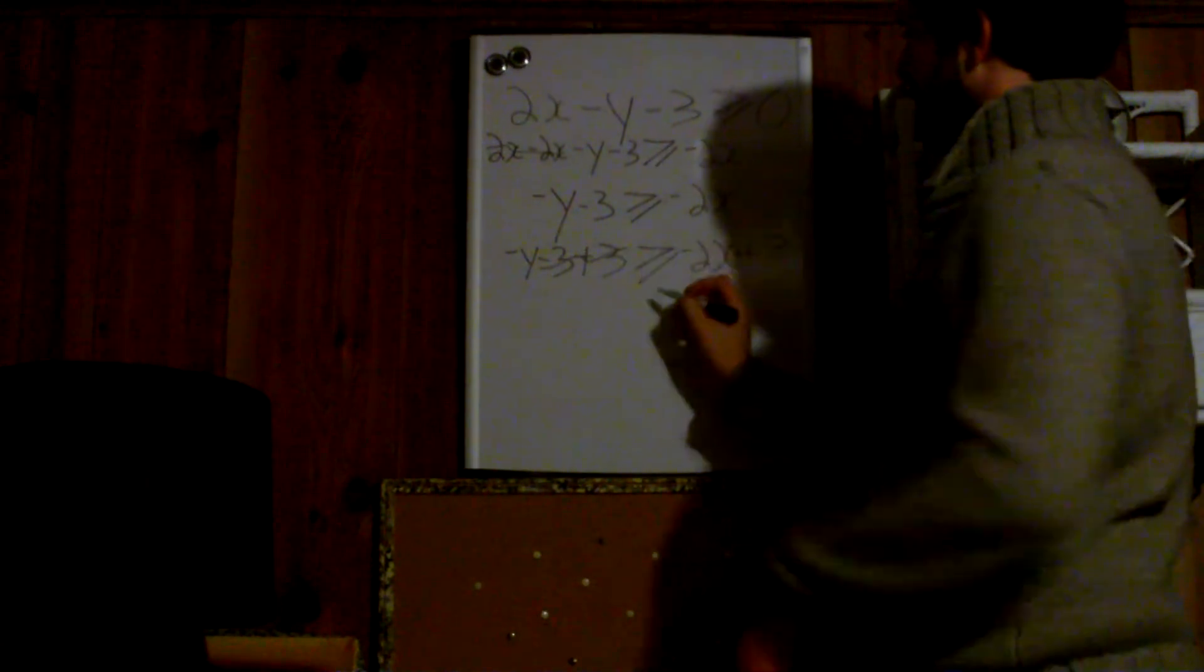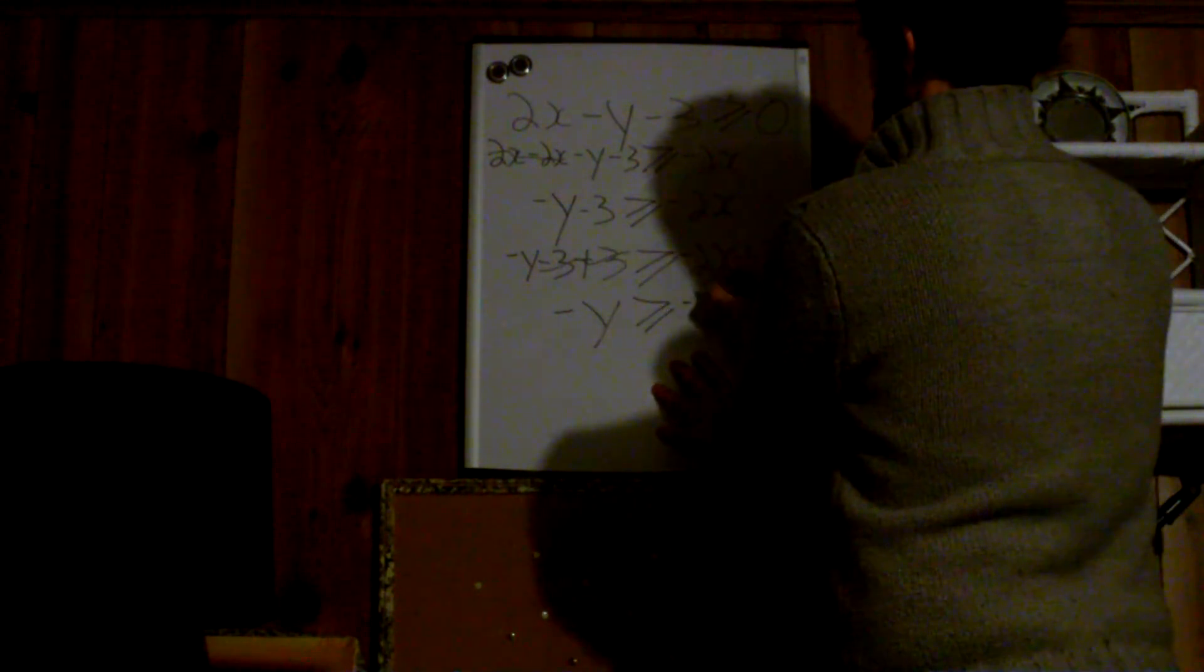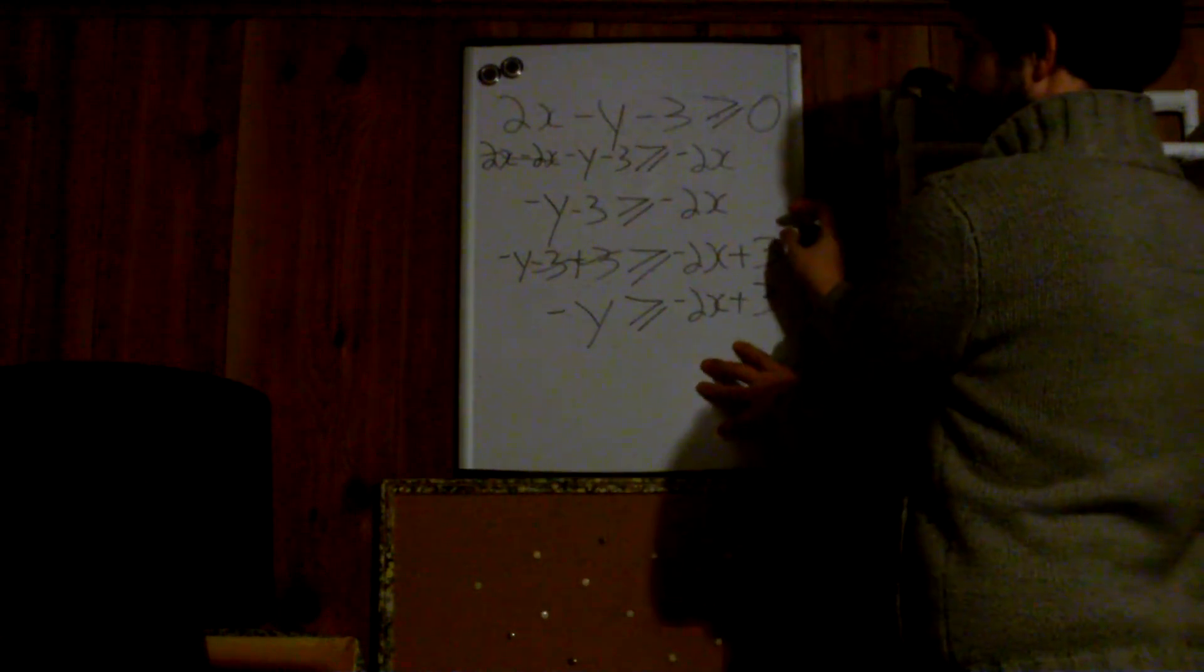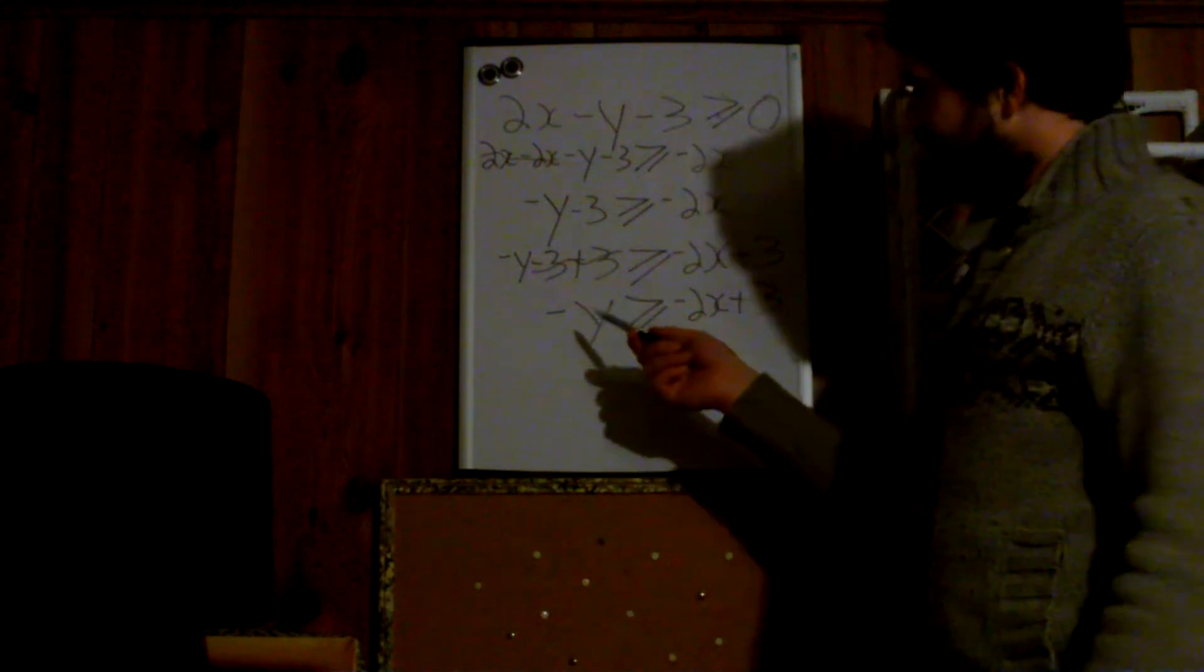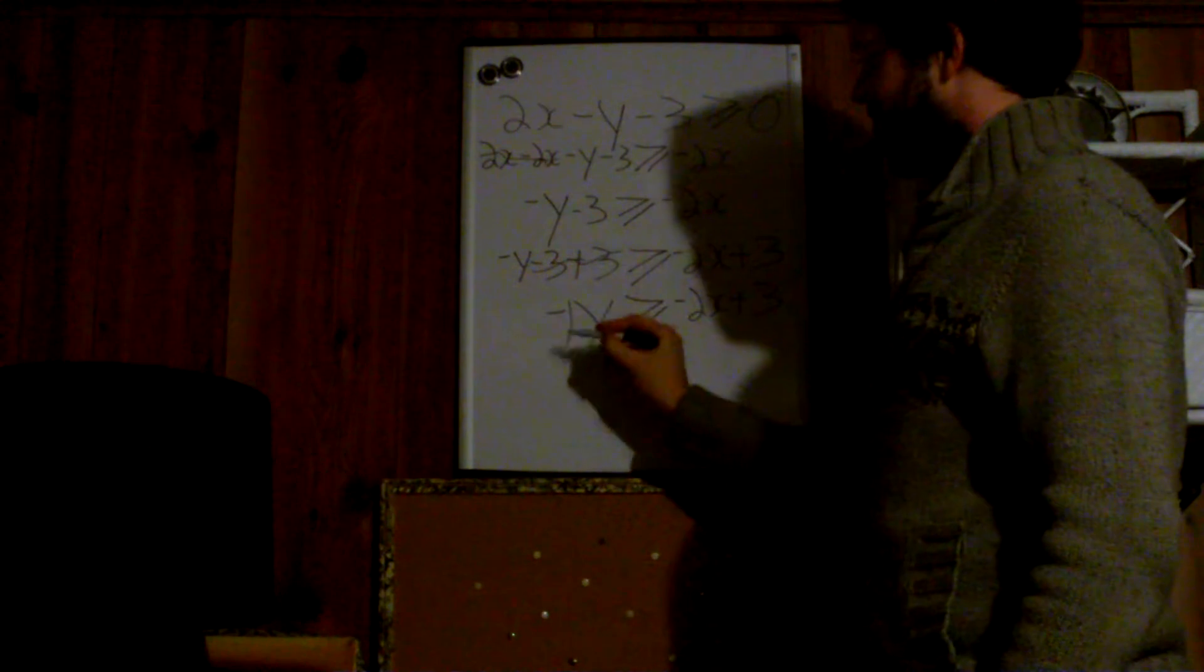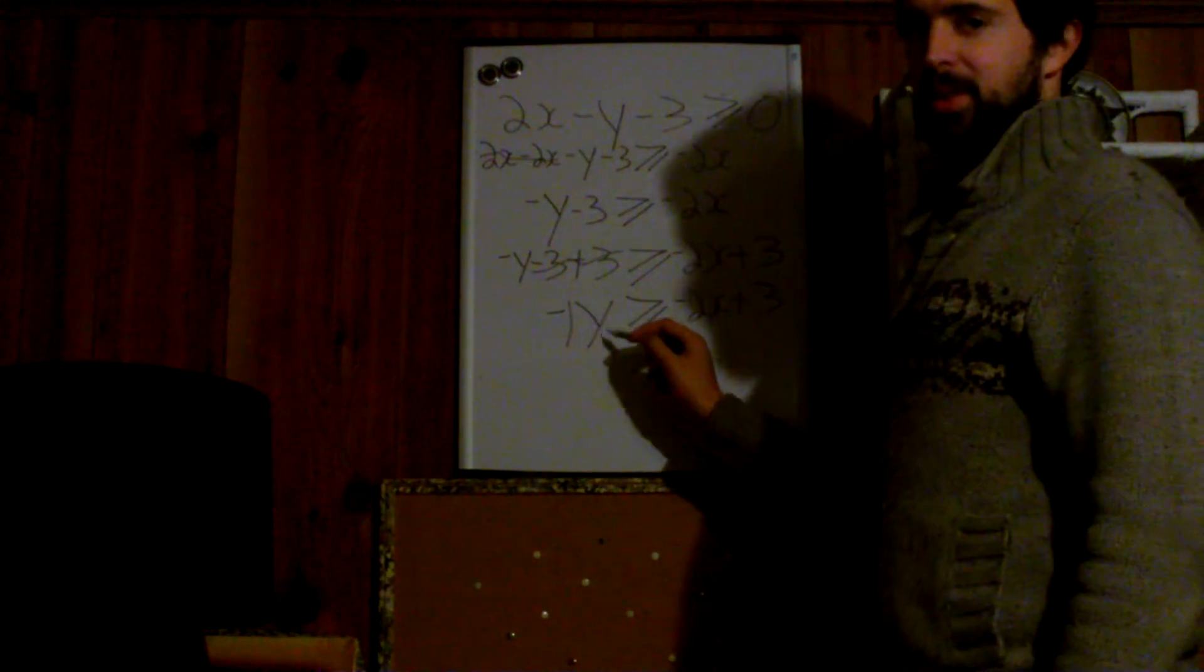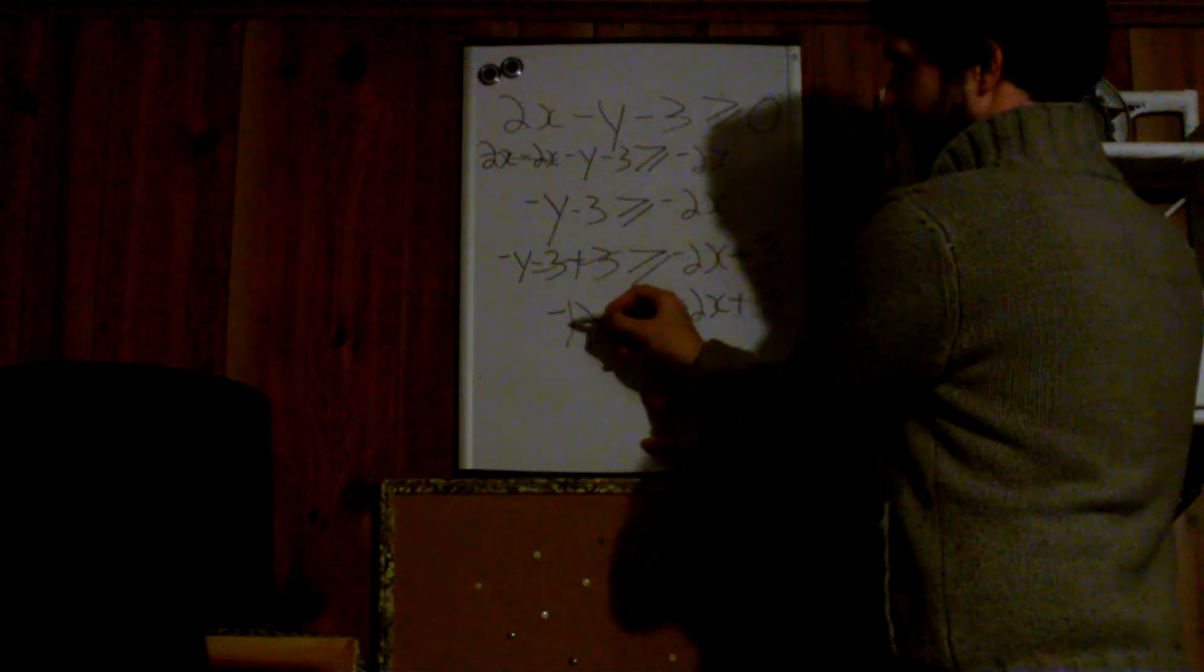These threes cancel. We're left with negative y is greater than or equal to negative 2x plus 3. So we're almost there, but our y is negative. We want a positive y. So if we look at this negative, it just looks like negative y, but when there's no number there, we assume there is a 1 there. It's actually negative 1y. So if we want to get rid of a number that's being multiplied by a variable, we have to divide by that number. So if I want to get rid of this negative 1 because it's being multiplied